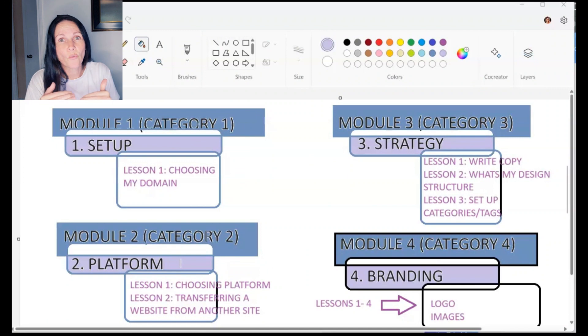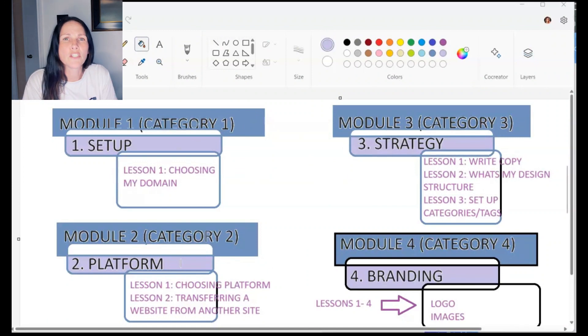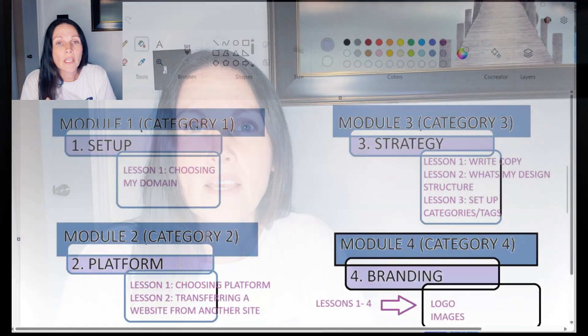Module Two: creating my client's brand — the 'branding' category. Lesson One: which color palette will I use and how to choose the best one for my client. Lesson Two: picking out the font that shows off the client's personality. In between all of this, ask yourself: can a done-for-you template go here? Can a workbook be put here? Make it engaging.